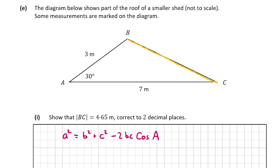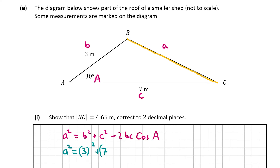In a trig question using a formula, I always recommend writing in what small a, b, c and capital A are. The only angle is 30 degrees, so capital A = 30°. The two sides between that angle are 3 meters and 7 meters, so b = 3 and c = 7. The side across from the angle — BC — is small a. It's very important that small a is opposite capital A.